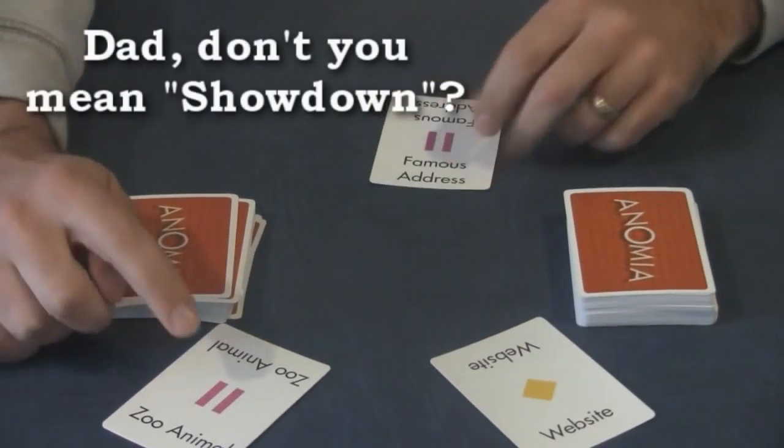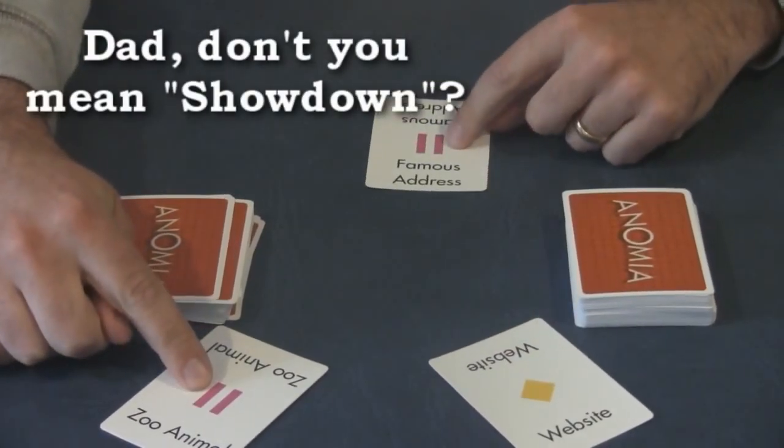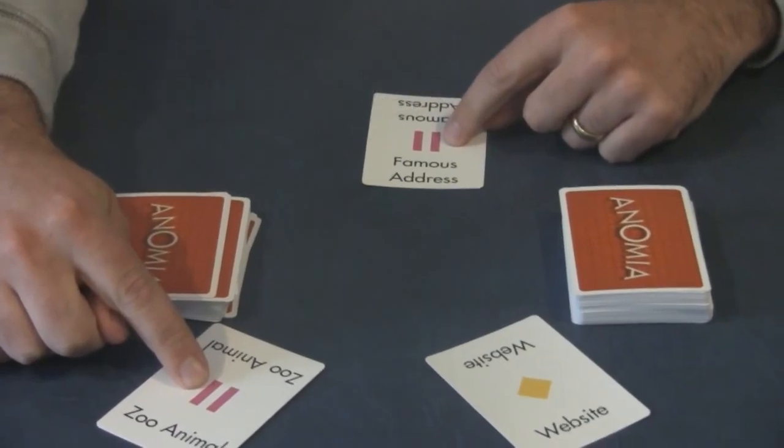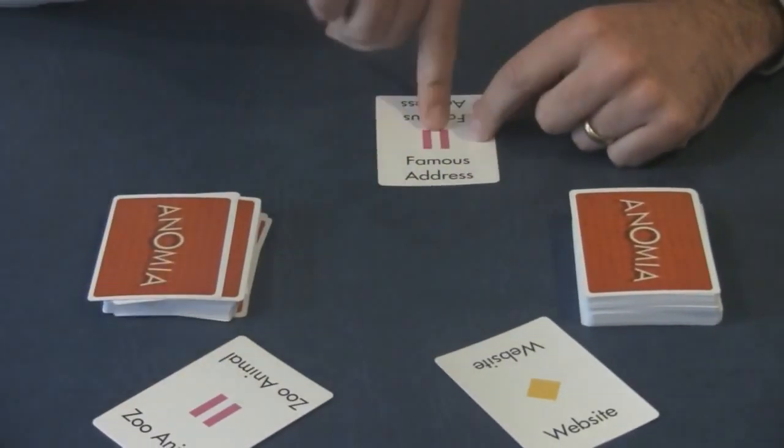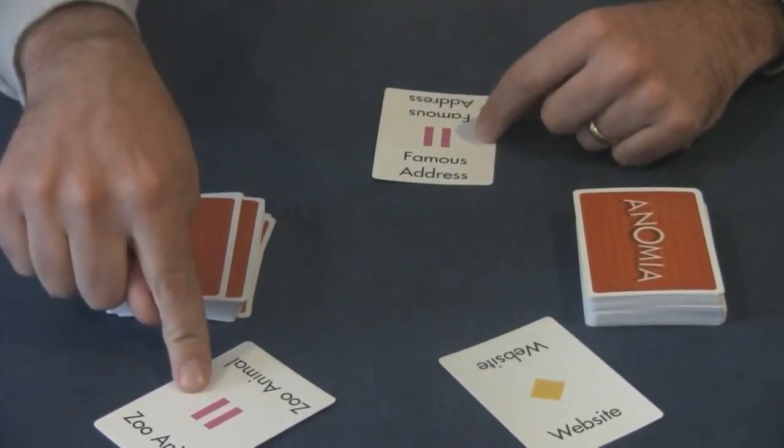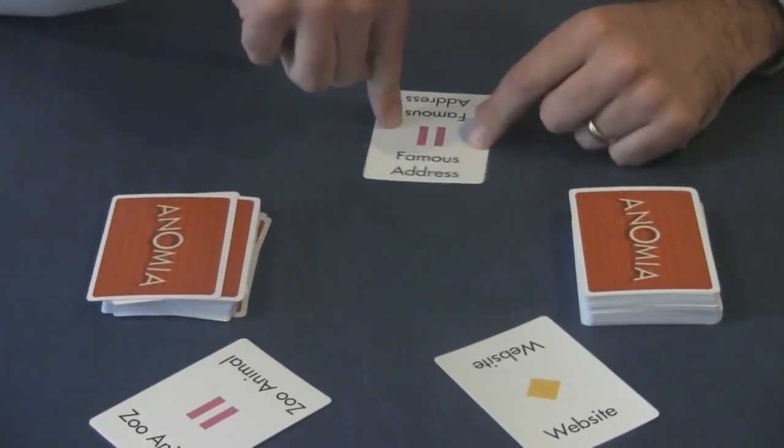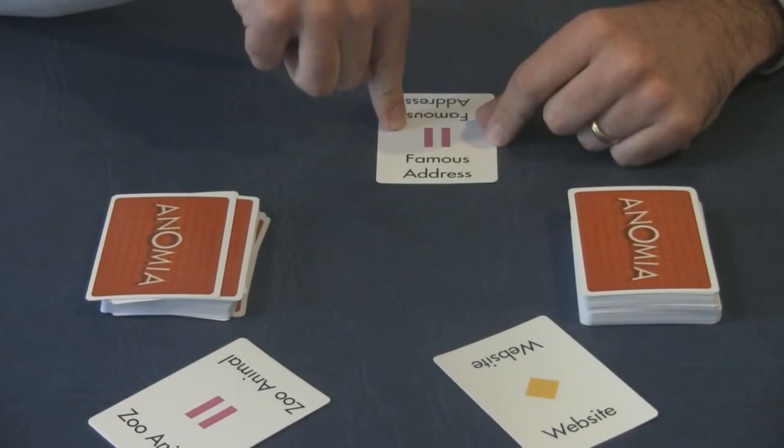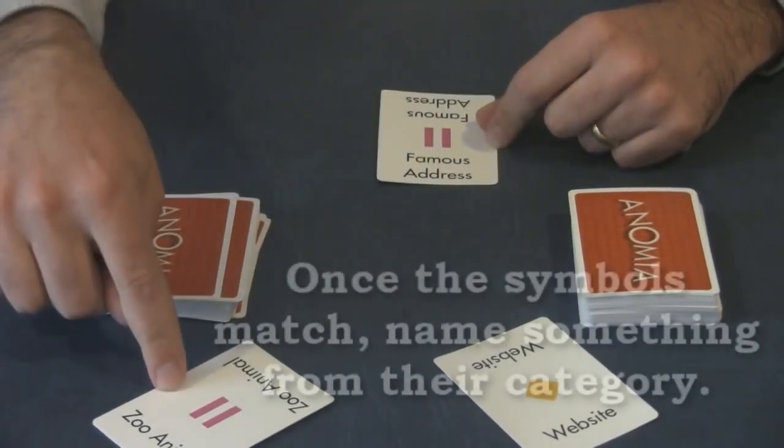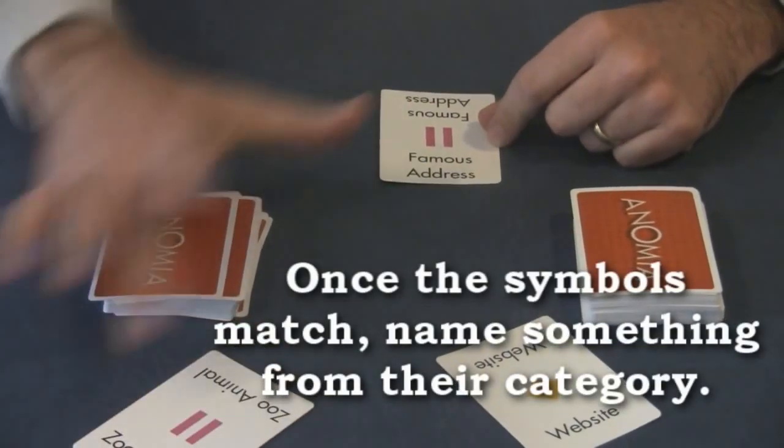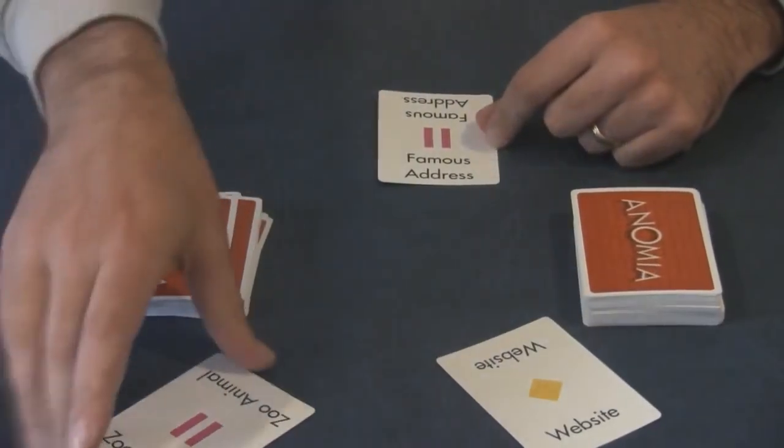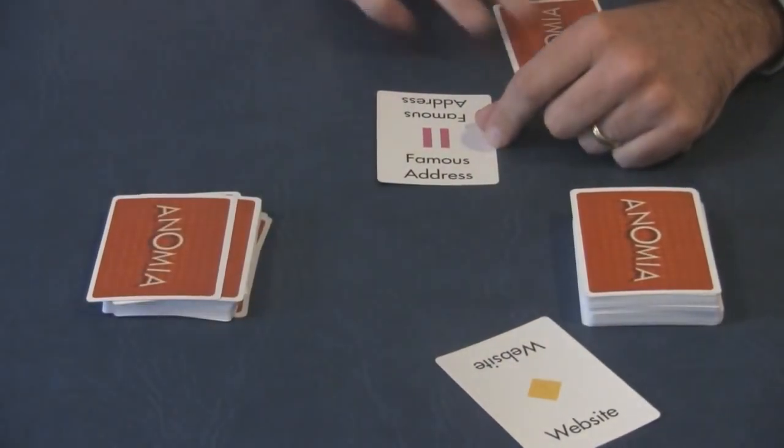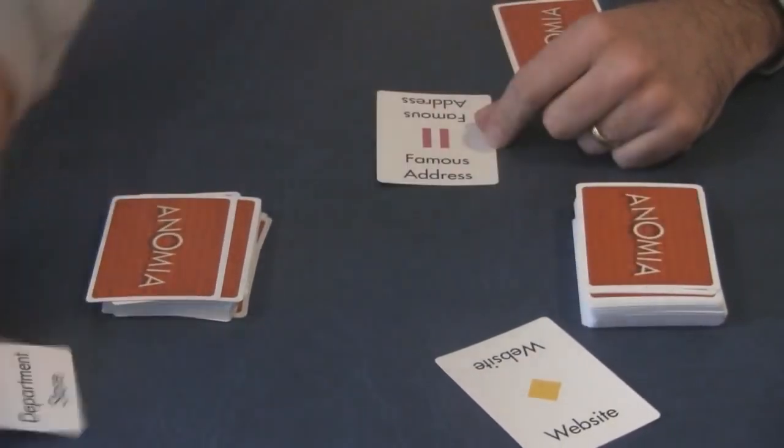Now, here's what happens. Now it's a showdown because this symbol, this double purple line like a pause symbol, has now popped up in front of him and me. Now I have to come up with a zoo animal before he can come up with a famous address, which I think I'm going to say elephant. So as soon as he flips that card, if I see there's a match in the symbols, I have to call out a category. And if I do, then I take his card and score. Then it goes on to the next person.